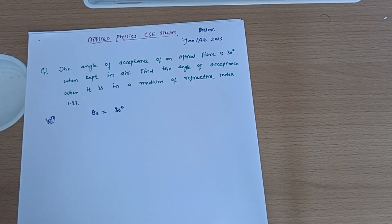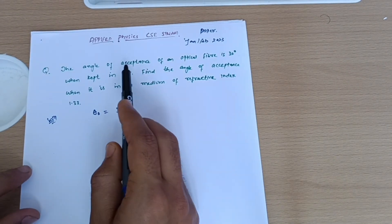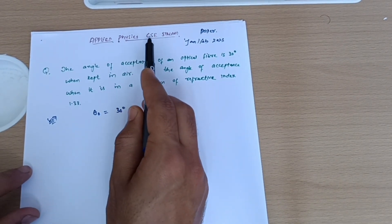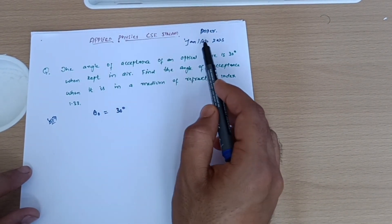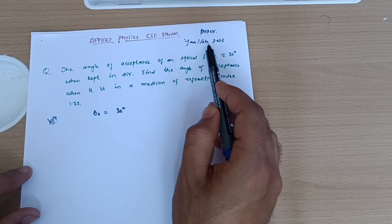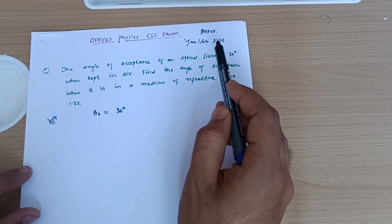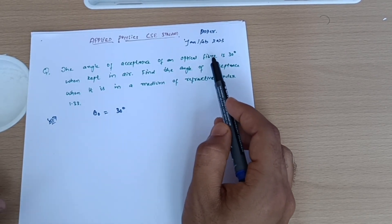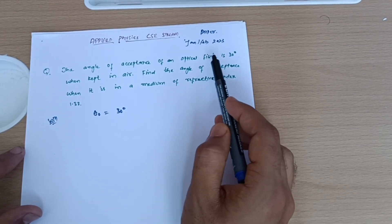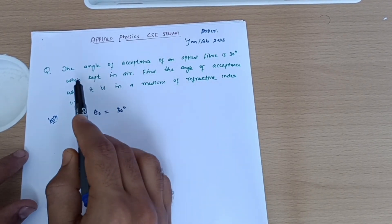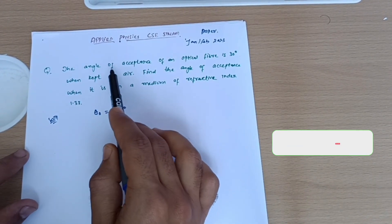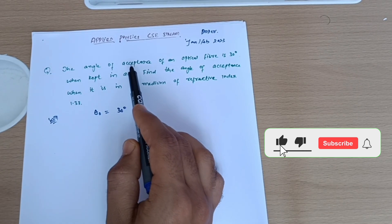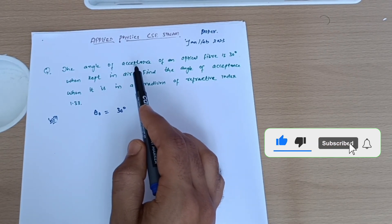Dear students, welcome back to my lecture. Here I will discuss another important numerical for applied physics, concerned with CSE stream students. I have taken the question from the January/February 2023 paper. In the previous lecture I discussed the question from the makeup paper, November/December 2023. Let us follow this particular question. You might have gone through the important derivation — numerical aperture.